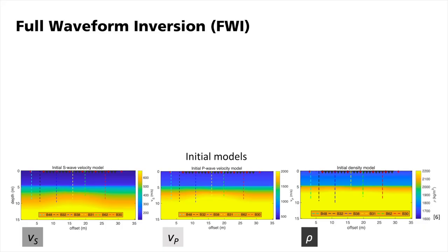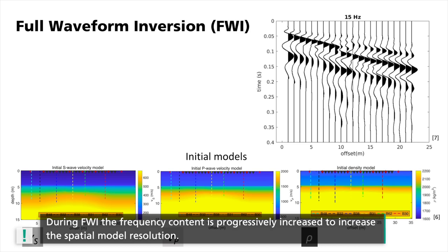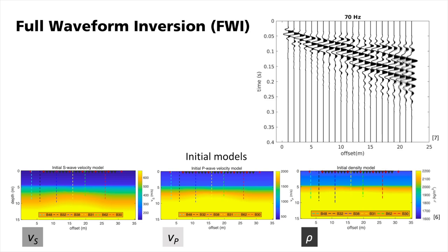And how does FWI invert the waveform data to determine the subsurface properties? We perform the 2D elastic full waveform inversion in the time domain using finite differences. We also use the so-called multiscale approach. Initially, we invert only for the low frequencies contained in the data. In following iterations during FWI, the frequency content is progressively increased to account for the full waveform information and to increase the spatial model resolution. Finally, the frequency band of the recorded data falls between 10 to 70 Hz.